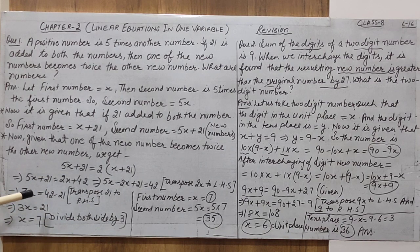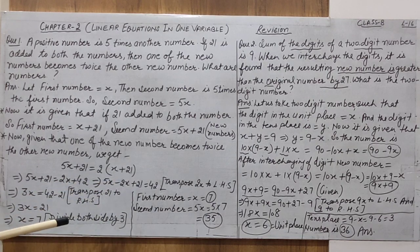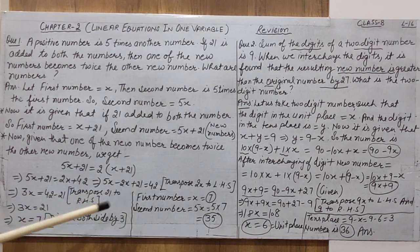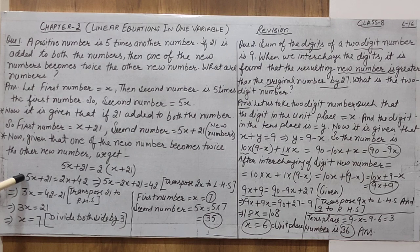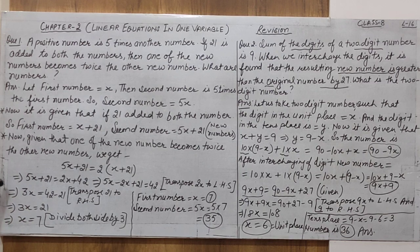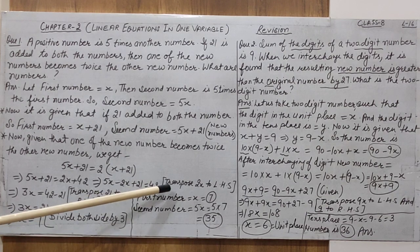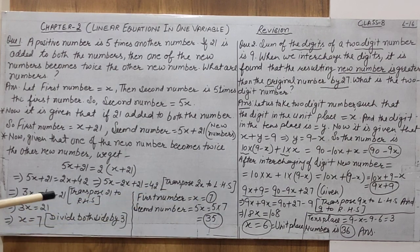Now let us solve this equation. 2 is multiplied with both terms using the distributive property, giving us 2x + 42 on the right side. So the equation becomes: left-hand side is 5x + 21 and right-hand side is 2x + 42.